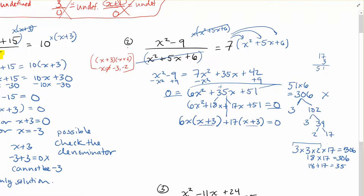Now, my x + 3 is common on both of those. So I can put the stuff at the front into brackets. I've got 6x + 17. x + 3 = 0.